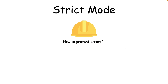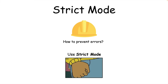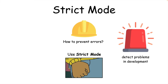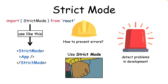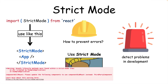To help make sure we don't run into errors like this, we can use something called strict mode. Strict mode is a special component which tells us about mistakes as we develop our React apps. We usually wrap it around our app component and it'll tell us when we really shouldn't do something.